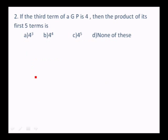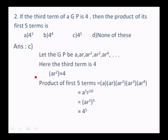GP Question 2: If the third term of a GP is 4, find the product of its first 5 terms. The product of terms a, ar, ar², ar³, ar⁴ = a⁵·r¹⁰ = (ar²)⁵. Since the third term ar² = 4, the product = 4⁵. Answer: option C.